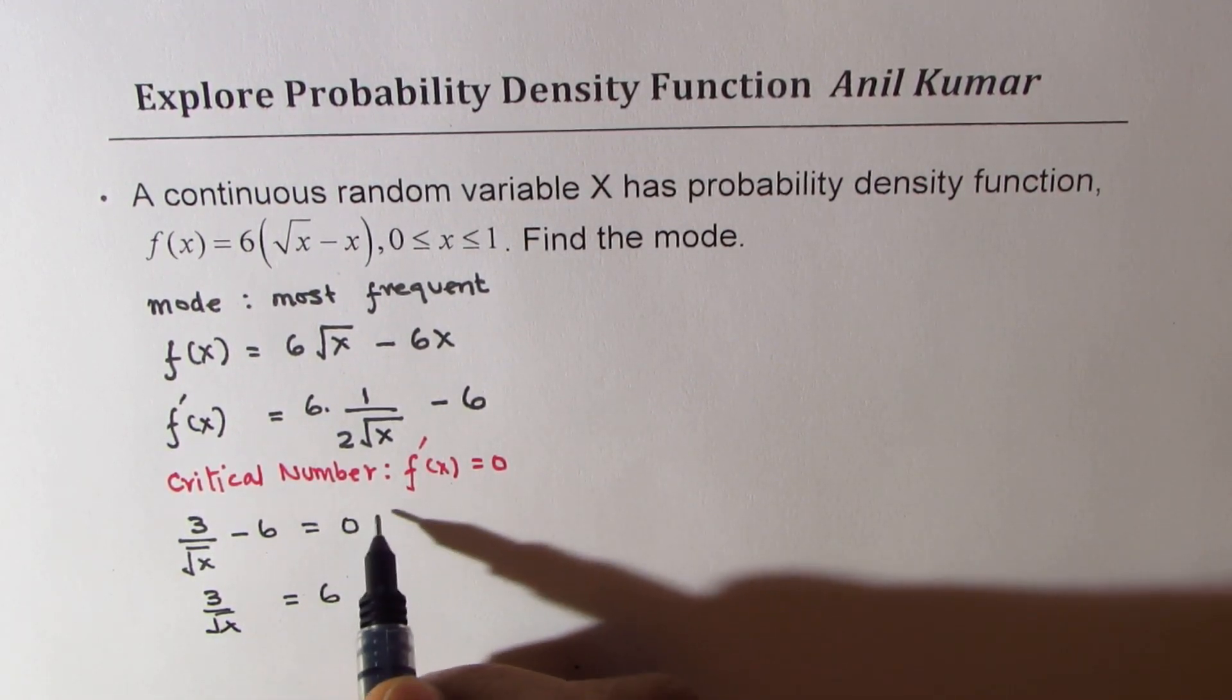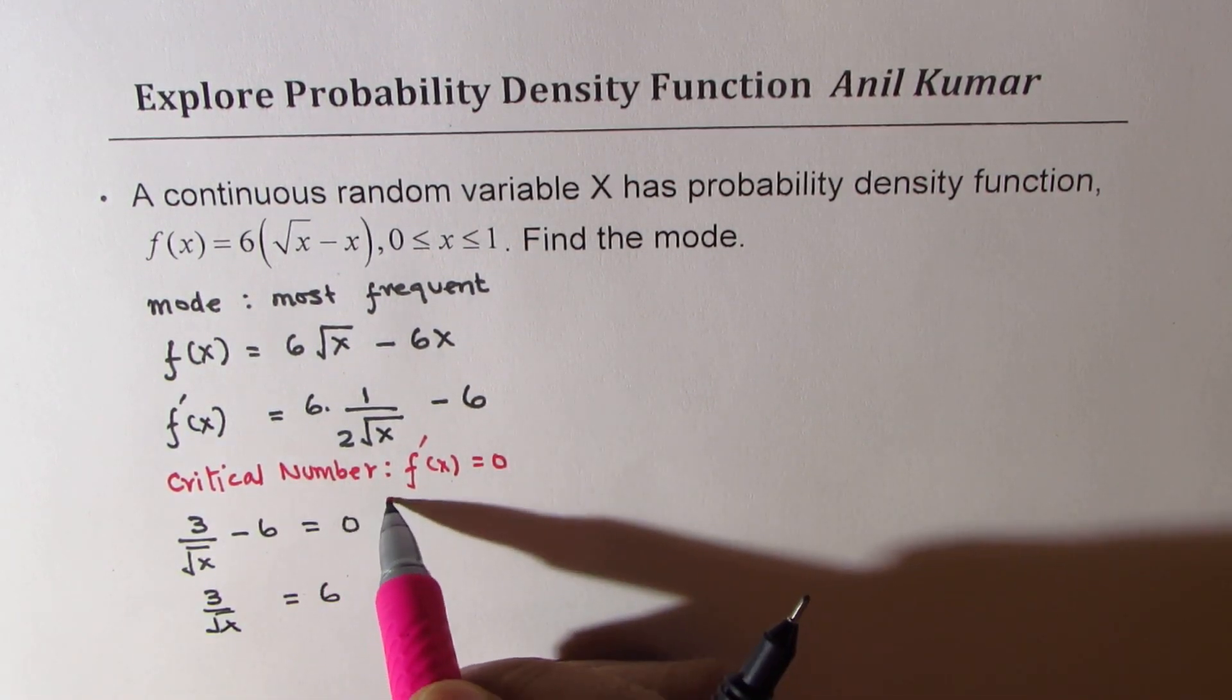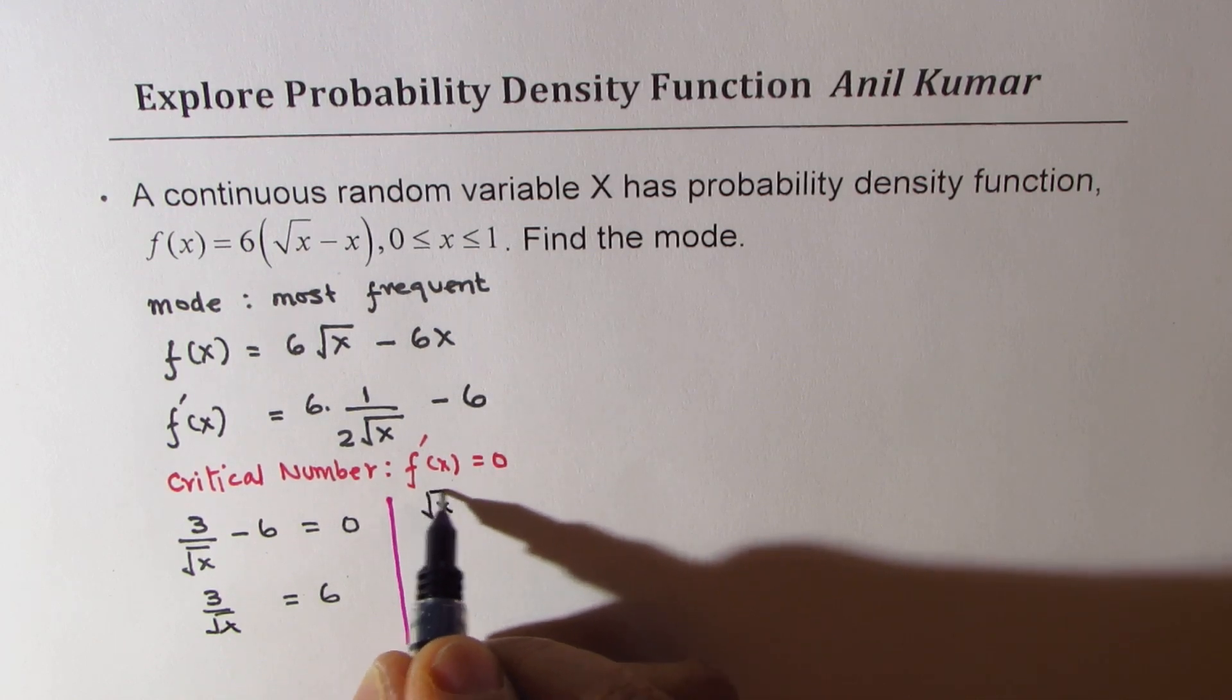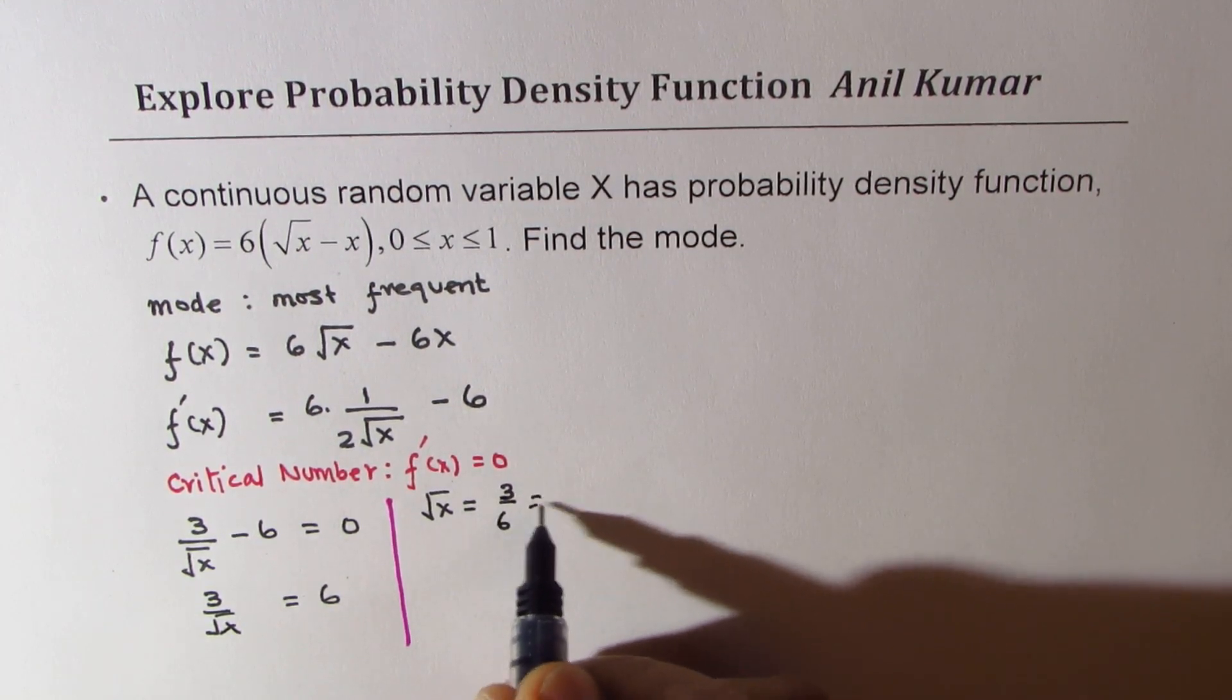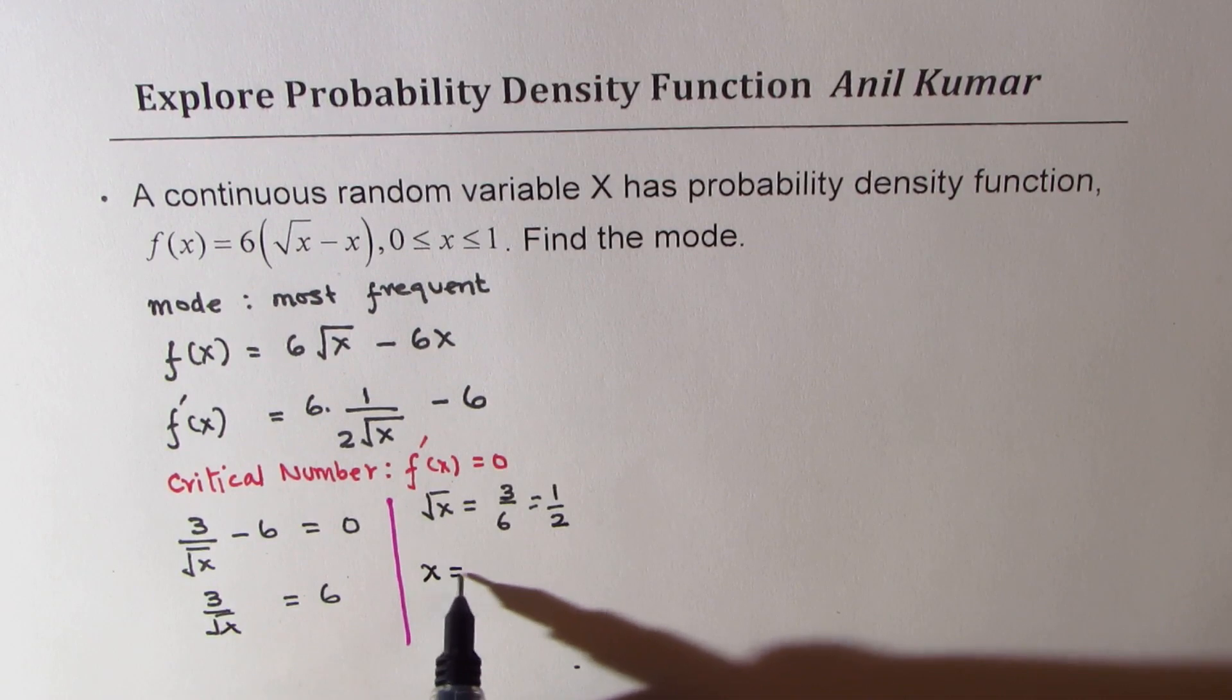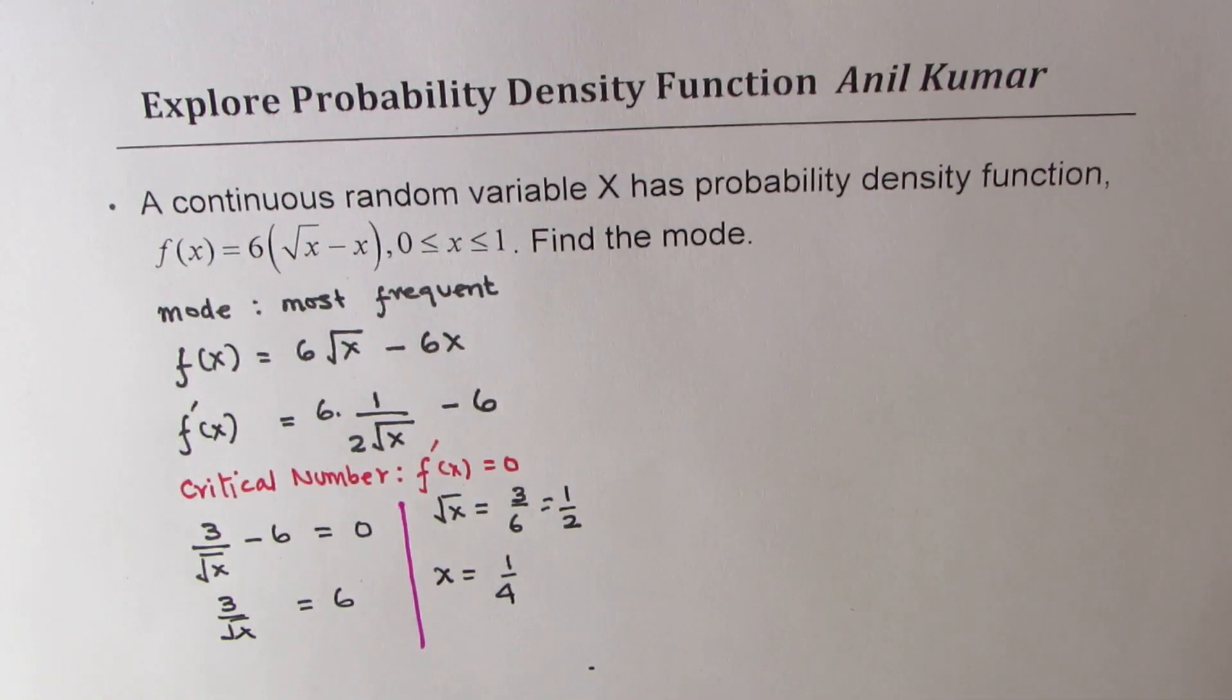Cross multiply, so we get square root of x equals 3 over 6, which is half. Or x equals square, so we get 1 over 4. So at x equals 1/4, we do have a critical number.